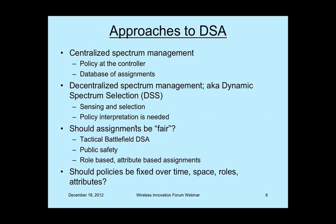If spectrum is to be managed, how can it be done? There are essentially two basic approaches: centralized and decentralized. In the centralized approach, a central controller decides which spectrum to assign to whom, and a database of spectrum assignments is kept — as in white space, for example. In the decentralized approach, sometimes referred to as dynamic spectrum selection (DSS), nodes decide autonomously on a peer-to-peer basis.